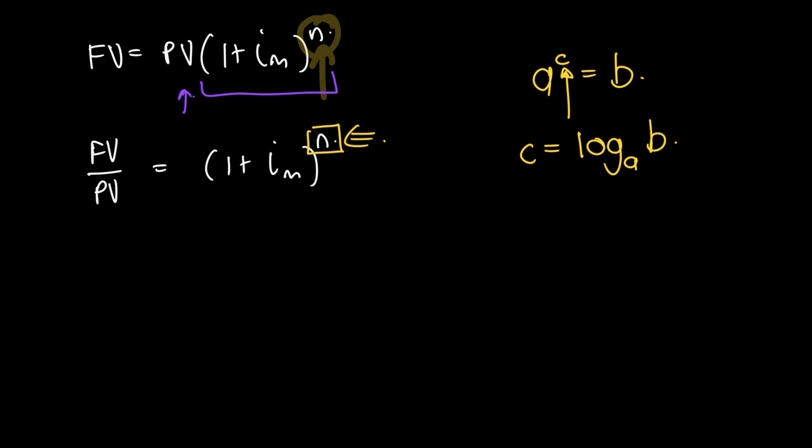The rule is essentially, if you have a to the power of c equals b, with three unknowns, your c is actually equal to log base a of b. We can solve for that exponent or power using this formula.